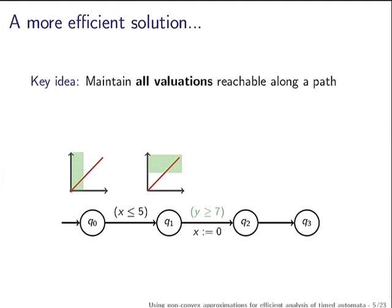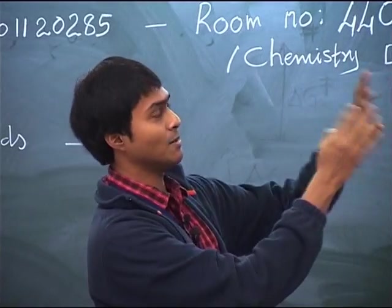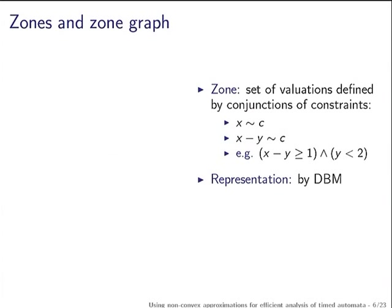Only the valuations with Y greater than 7 can cross, and when they cross the value of X gets reset. If you look at the valuations that reach a particular state of the automaton, they can be described by simple constraints involving just the difference of two clocks compared to a constant. This is what happens in general for every automaton, and this is the intuition for defining what are called zones.